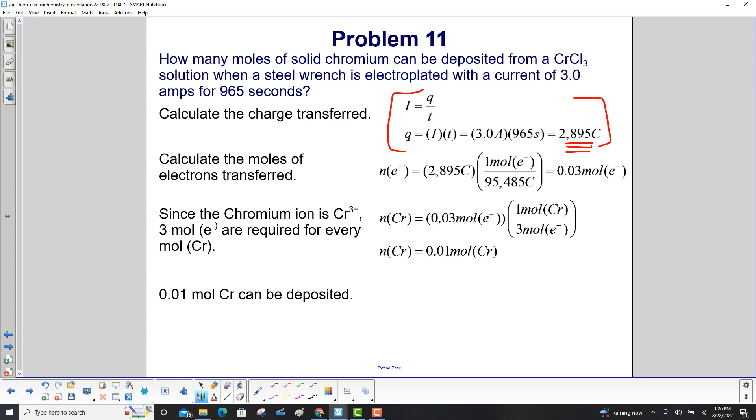Calculate the moles of electrons transferred. That's the charge times Faraday's constant: 2895 coulombs times 1 mole of electrons per 95,485 coulombs equals 0.03 moles of electrons.